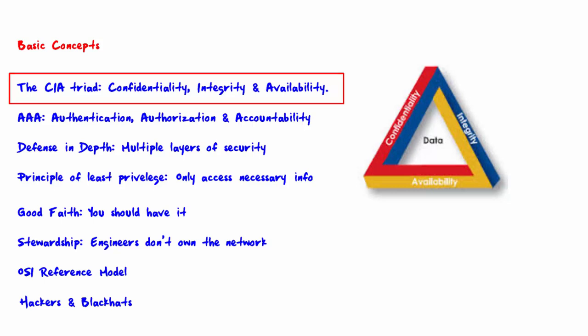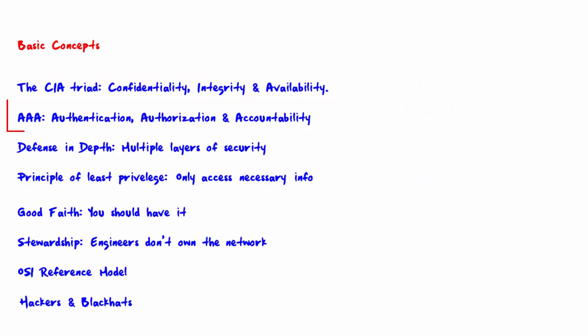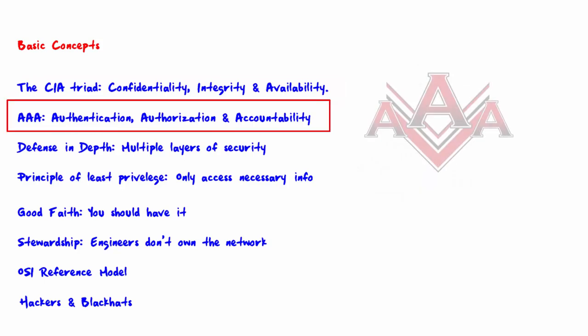The next concept is AAA, or authentication, authorization, and accountability. Authentication means proving that you are who you say you are. So if you log in as Huckleberry and you produce Huckleberry's password, then the system will likely authenticate you.